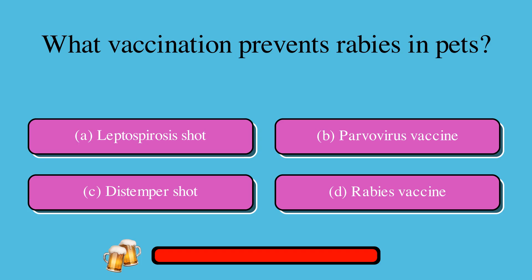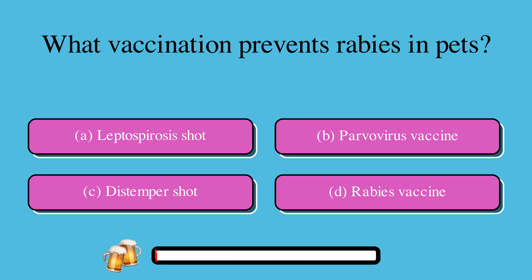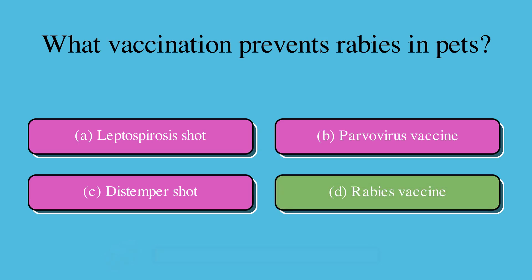What vaccination prevents rabies in pets? A. Leptospirosis shot, B. Parvovirus vaccine, C. Distemper shot, or D. Rabies vaccine. The correct answer is D. Rabies vaccine.